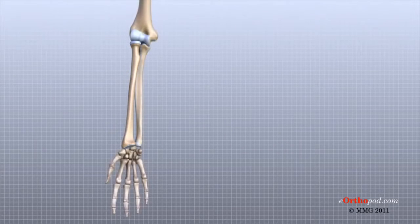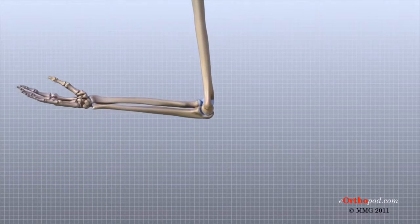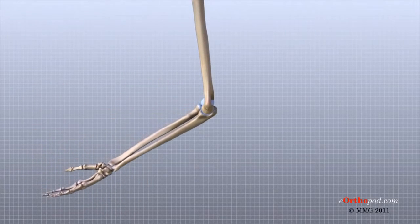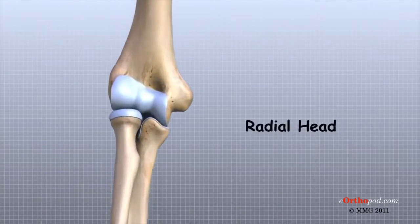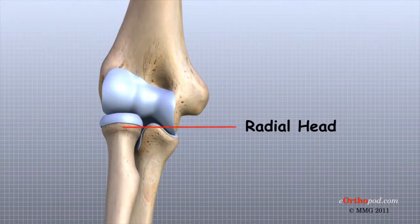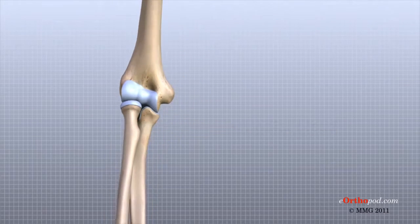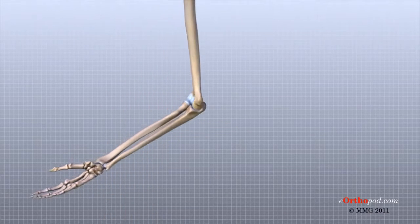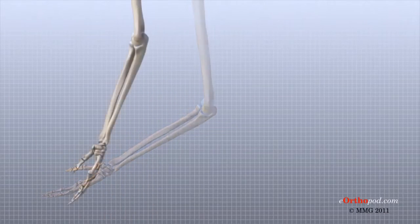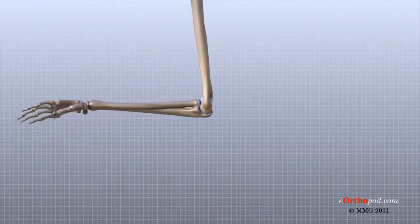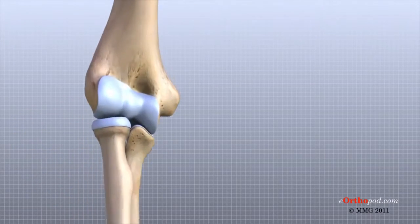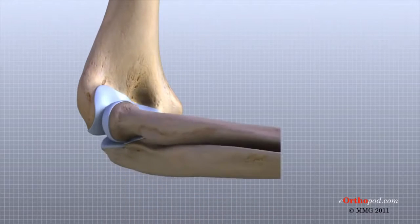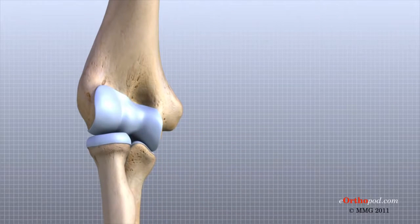The elbow itself is essentially a hinge joint, meaning it bends and straightens like a hinge. But there is a second joint where the end of the radius, or the radial head, meets the humerus. This joint is complicated because the radius has to rotate as you turn your hand palm up and palm down, while at the same time it has to slide against the end of the humerus as the elbow bends and straightens.